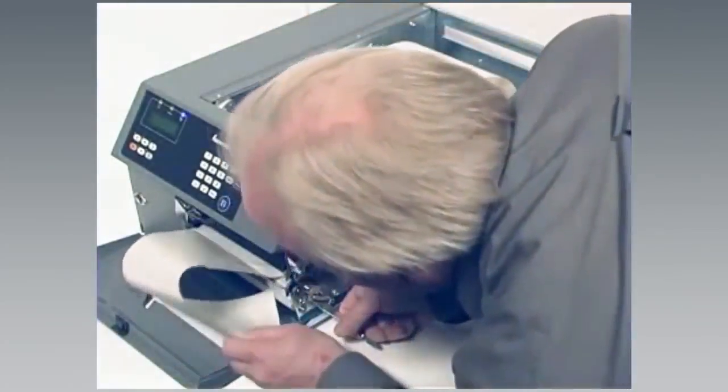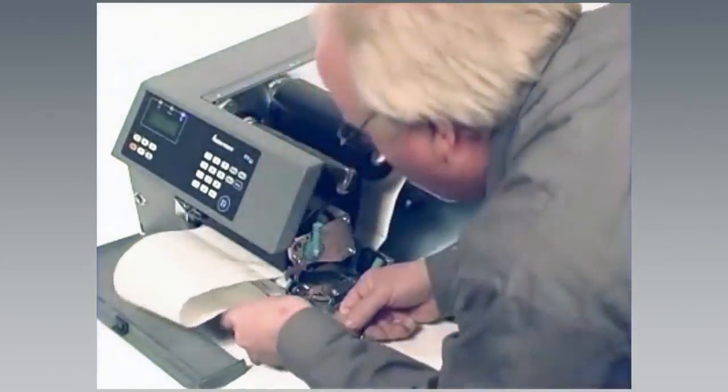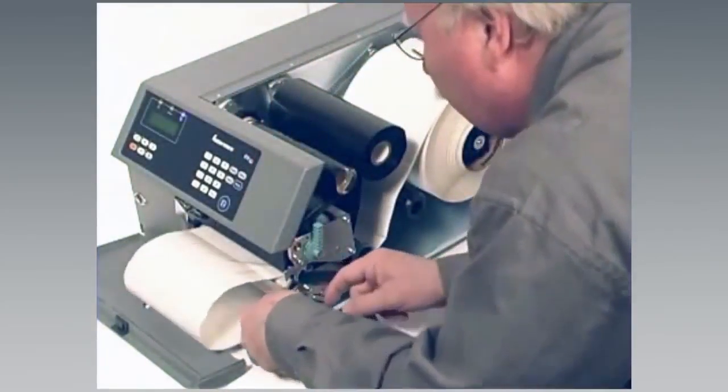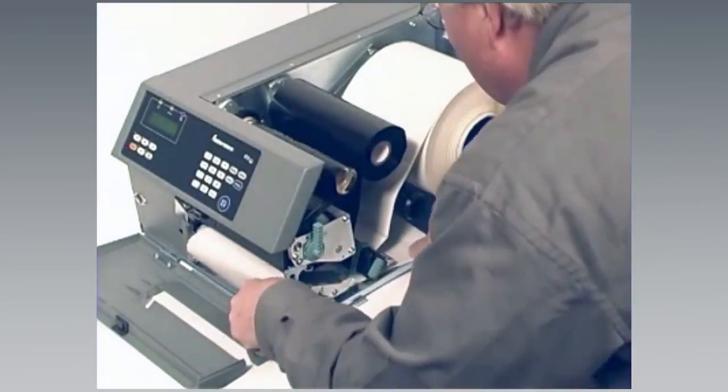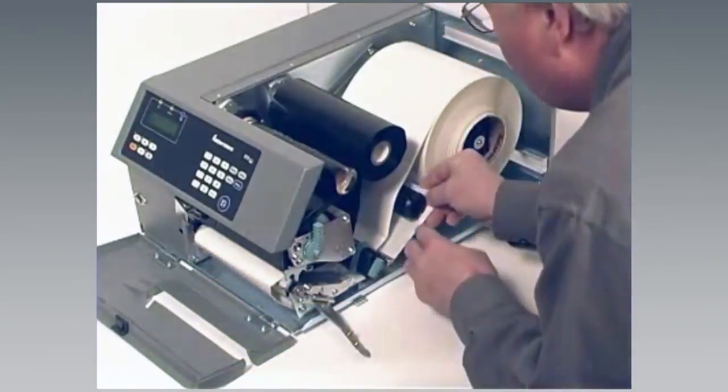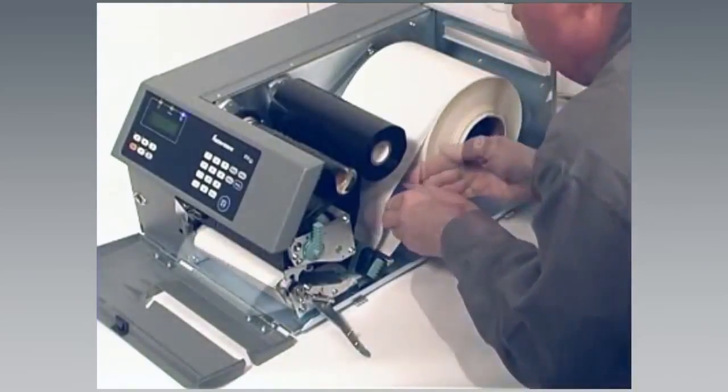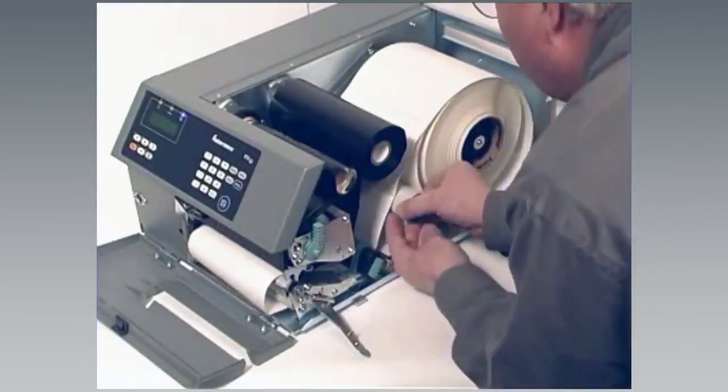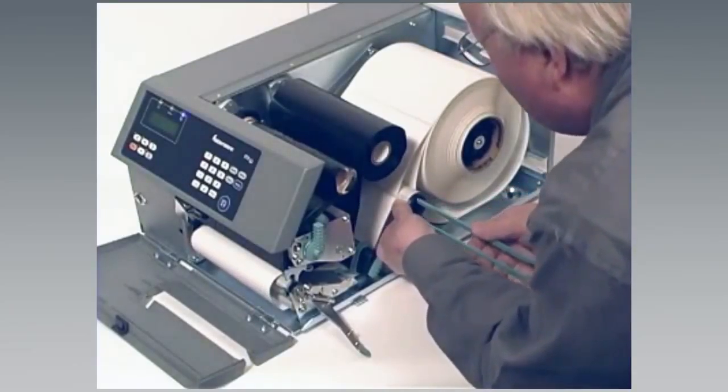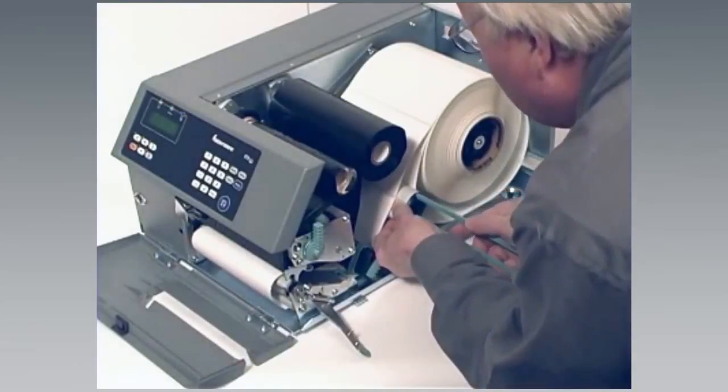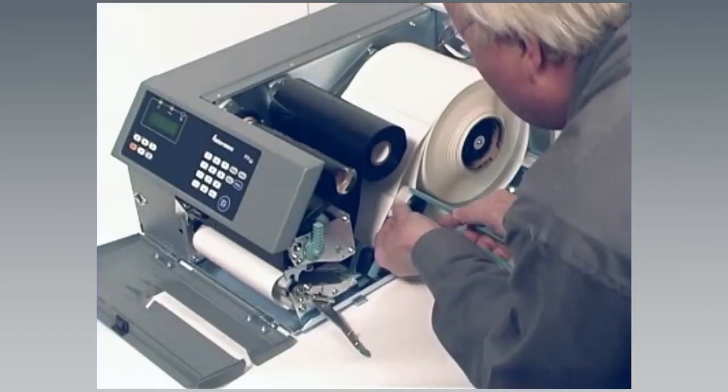Route the liner through the tear bar and back under the print mechanism. Secure the liner to the take-up hub with the green clip and rotate the hub until the media is pulled tight.